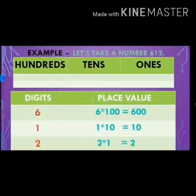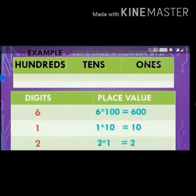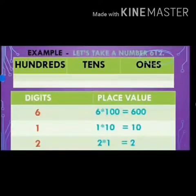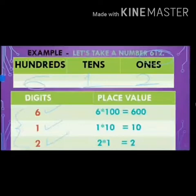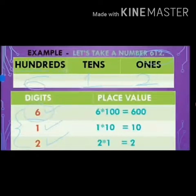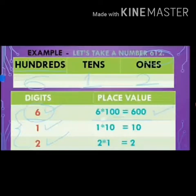Now here is an example. Let's take the number 612. In number 612: 2 is at the 1's place, 1 is at the 10's place, and 6 is at the 100's place. The digits are 6, 1, and 2. To find the place value of 6, first we check the position of 6 in the number. The position of 6 is at the 100's place. Therefore, the place value of 6 is 6 × 100 = 600.